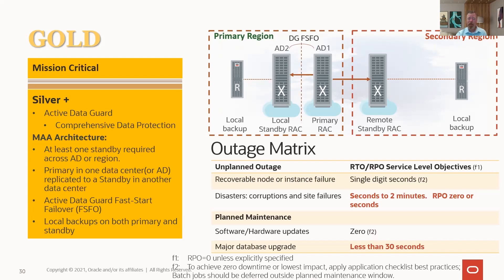You also want to be using application continuity, because it works not just with RAC but also with Active Data Guard. It will replay in-flight transactions. We want to help developers so they don't have to create all this error handling to deal with in-flight transaction failures — we just replay them. There are lots of different parameters you can set to deal with lag and avoid false positives with fast start failover. We've added more knobs, more tests, observer validation for fast start failover — you can test these configurations without actually kicking over the failover. Some of those capabilities just came in with 21c.